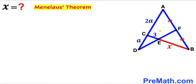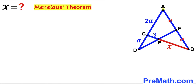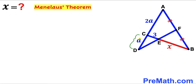Welcome to Premath. In this video we have got these two triangles — triangle ABC and triangle ADF — put together as shown in the diagram, such that segment AF equals segment FB. Segment AC is represented by 2a, the tiny segment CD is lowercase a, segment CE is 3 units, segment EB is represented by x, and our task is to find the value of x — in other words, to calculate the length of segment EB.